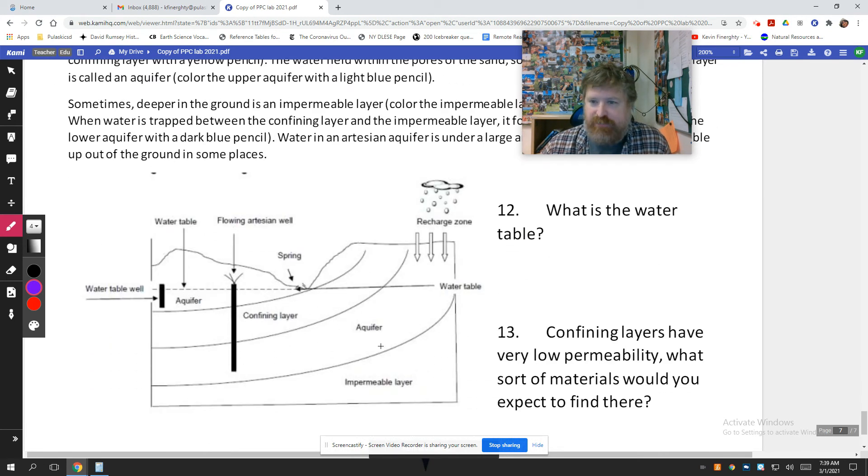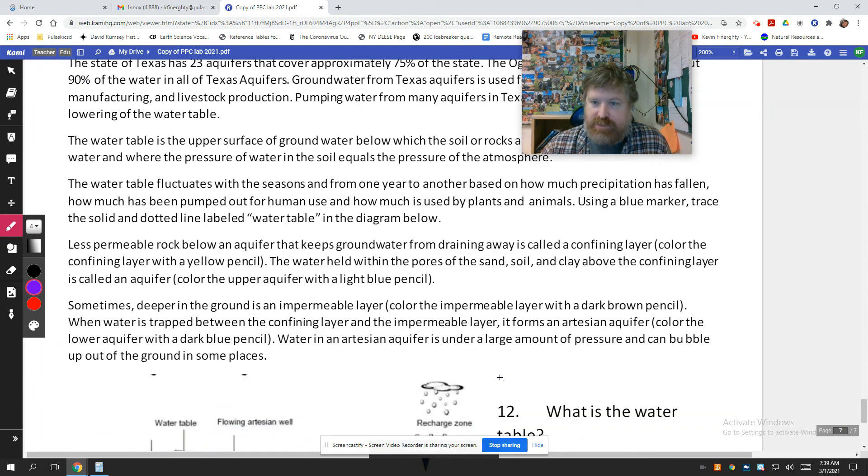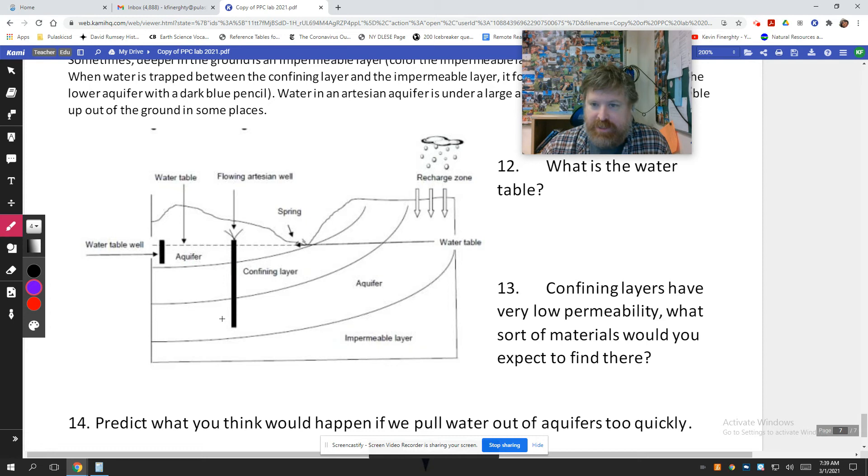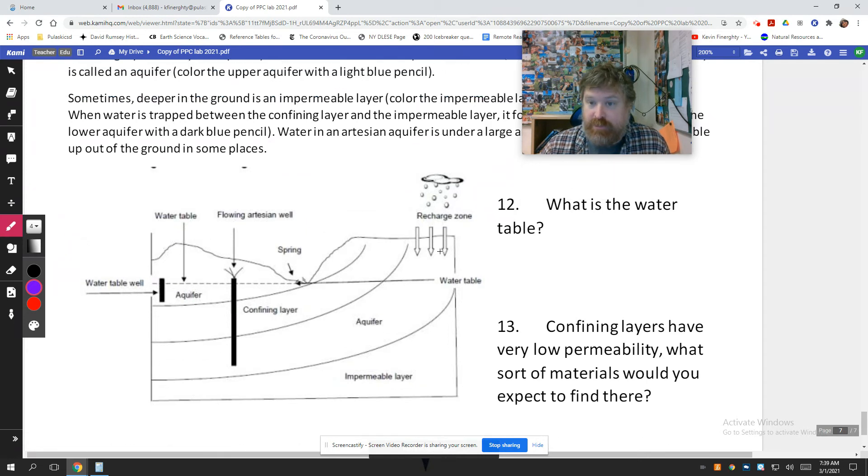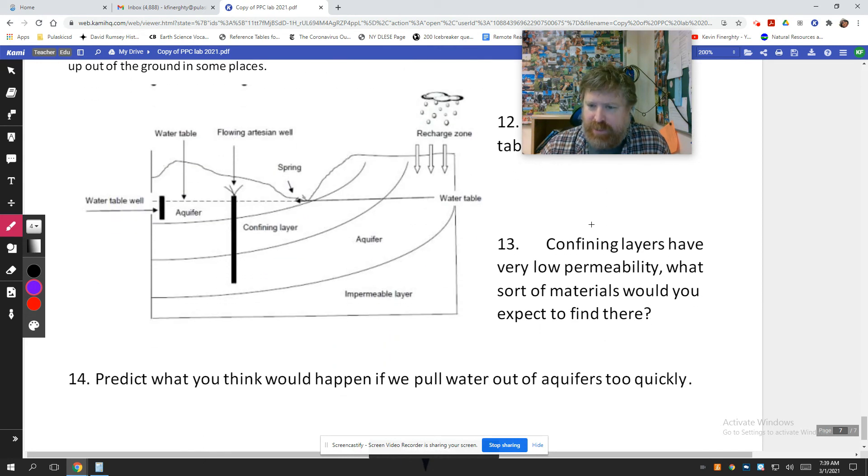Down here, this is very easy for me to tell when people skip this reading. Because as you read this, it's going to say things like, using a blue marker, do this. Using red, do this. So you're going to be doing some coloring on this diagram using the cami pens. Yes, you will. What is the water table? Once you color, people usually figure that one out pretty easily.